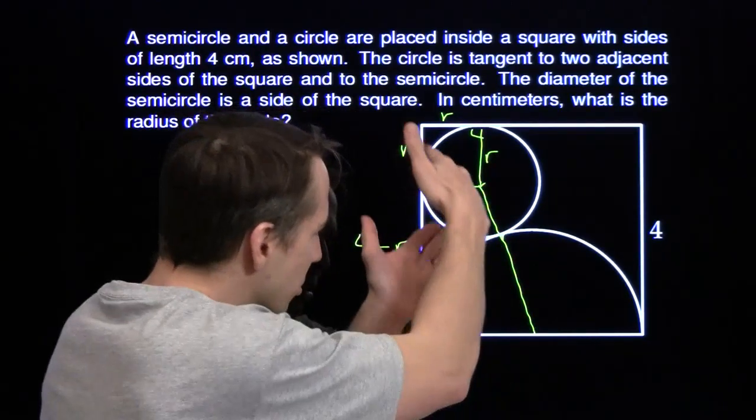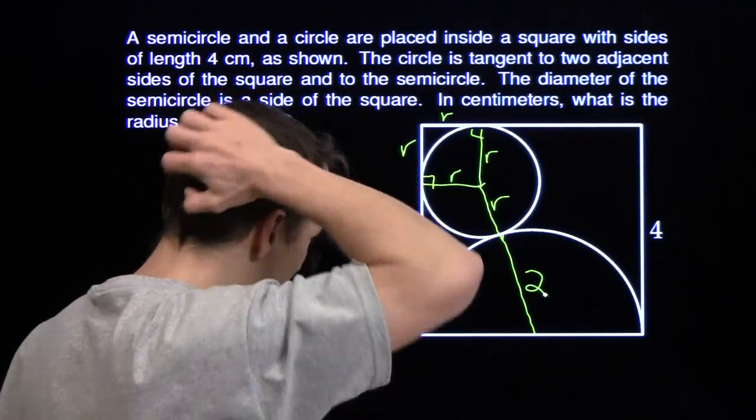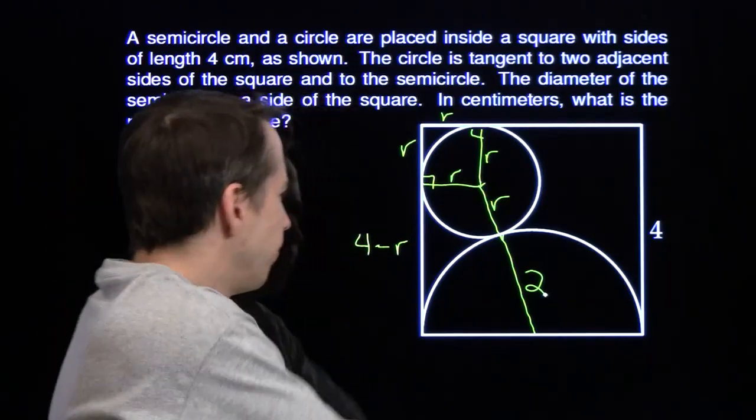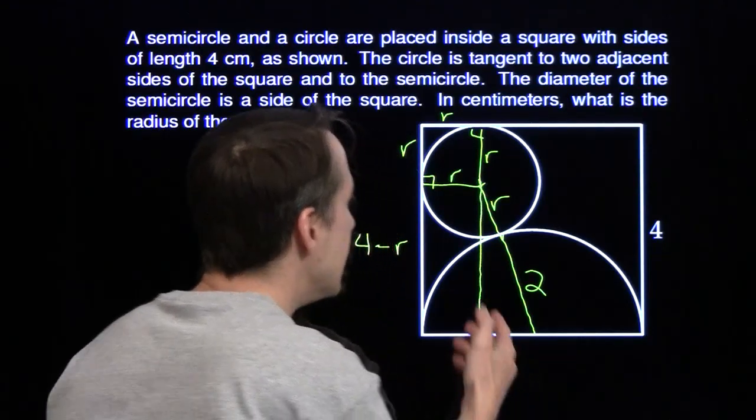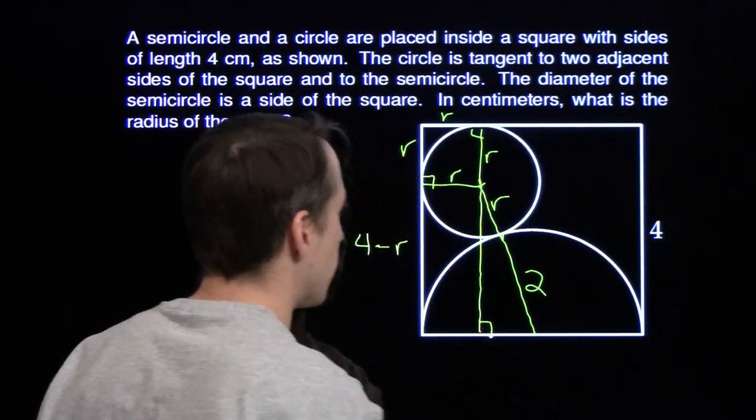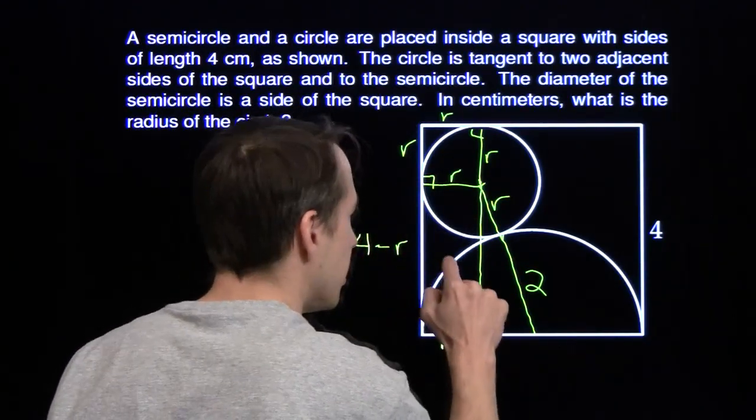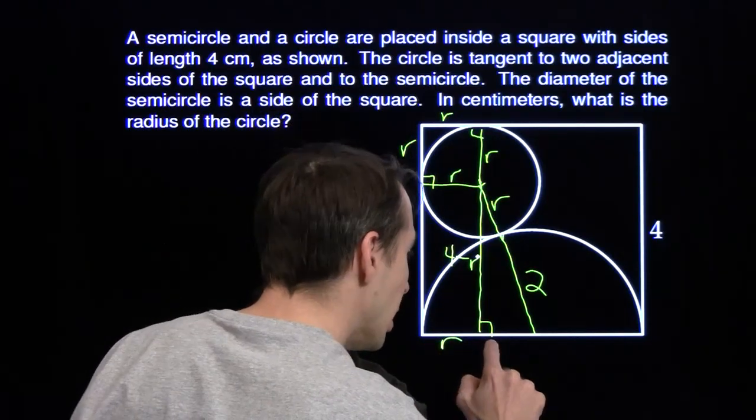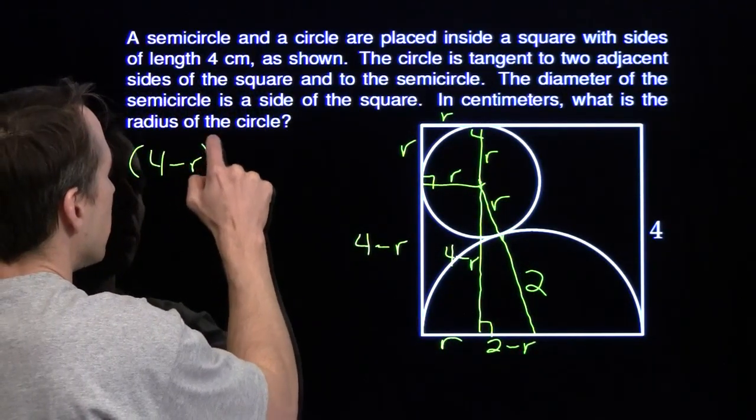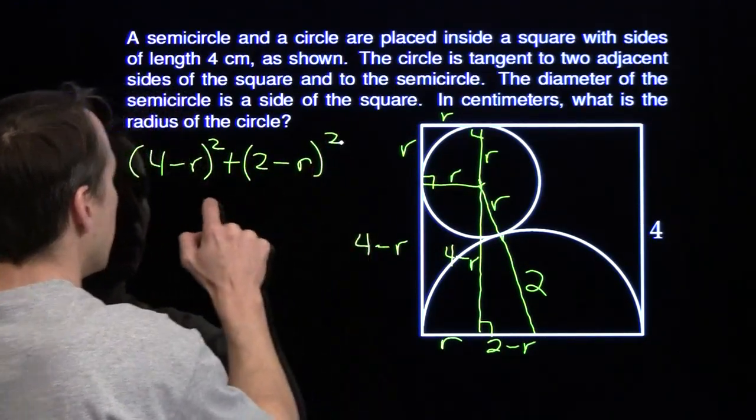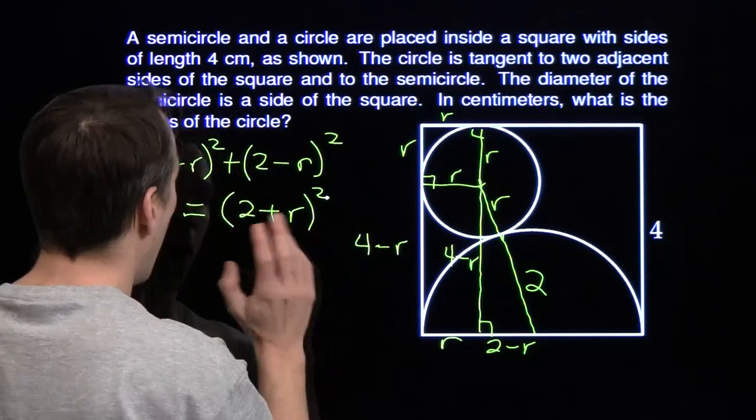Whenever we have tangent circles, I like to connect their centers. So run right through the point of tangency. This will be R. And we know that the radius of this semicircle is 2, so this is 2. So this whole thing is 2 plus R, but I still don't have a right triangle. Build one. We just keep extending this down, and now we have a right triangle. This right here is a rectangle, so this down here is R. And this over here is 4 minus R. This little side right here is 2 minus R. And now we can use the Pythagorean theorem on this triangle. We have 4 minus R squared plus 2 minus R squared, and that equals 2 plus R squared.